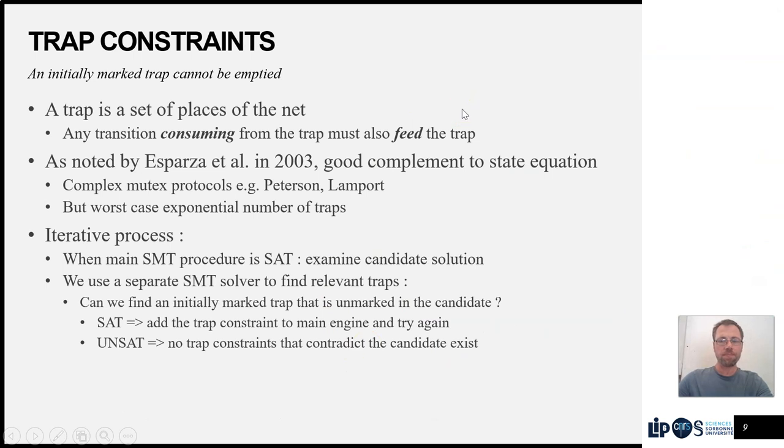The first one is the trap constraints. A trap is a set of places of the net such that any transition that consumes from this set must also feed the trap. It was identified in a paper by Javier Esparza that this is a very good complement to the state equation that allows to conclude for some mutual exclusion protocols. A trap is a set of places that can never be emptied. Unfortunately, there are a worst case exponential number of traps.